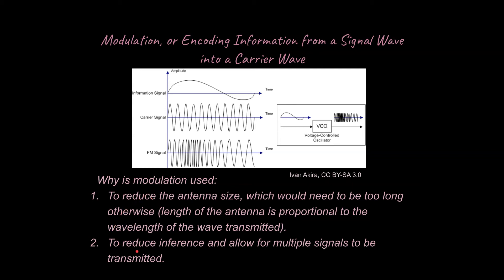Secondly, another reason why modulation is used is to reduce interference and allow for multiple signals to be transmitted. So if you're dealing primarily at one frequency, for instance, you can tune other frequencies out and tune into certain frequencies with the receiver. And that means that different radio stations, for instance, can transmit at different radio frequencies. And if the receiver is not focused or receiving at that certain frequency, the other frequencies just go right by it. You don't hear every radio station when you're focused just on one with your receiver.